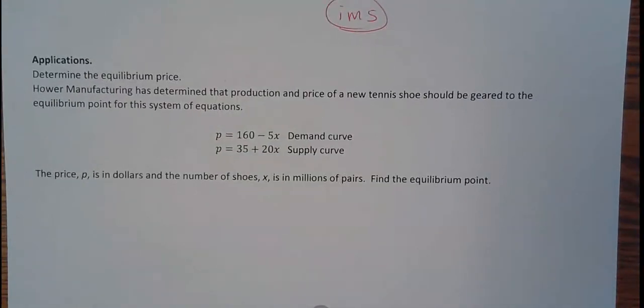The equilibrium point. How are manufacturing? You didn't know that. On the side, I have a manufacturing company. We make tennis shoes. So it's determined, because it's my company, so I determined this, that production and price of new tennis shoes should be geared towards equilibrium points. That's where the supply and the demand are about equal. So I'm trying to find the right price to charge. If I charge too much, the demand will go down and my supply goes up too fast because I'm not selling them. And then, vice versa. If I sell them for too little, the demand will be high because everybody wants the Hauer shoes. Then the supply, I won't have enough to sell and my supply goes down. So I want to try to find that equilibrium point.